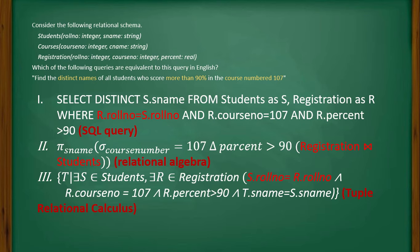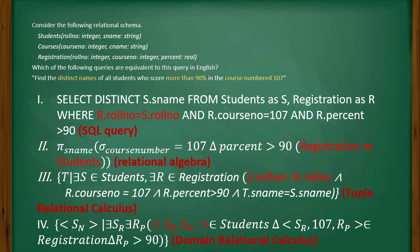The third query is tuple relational calculus: {t | ∃s ∈ students ∧ ∃r ∈ registration ∧ (s.roll_number = r.roll_number ∧ r.course_number = 107 ∧ r.percent > 90 ∧ t.s_name = s.s_name)}. The fourth query is domain relational calculus: {sn | ∃sr ∃rp ((sn, sr) ∈ student ∧ (sr, 107, rp) ∈ registration ∧ rp > 90)}. These four queries are given and we have to determine which are equivalent to the given statement.